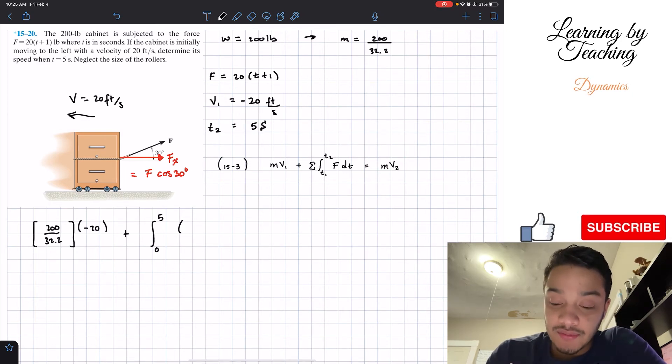Well, but what is F? F is given to us as 20 multiplied by t plus 1 and multiplied by the cosine of 30 degrees. This is with respect to time.